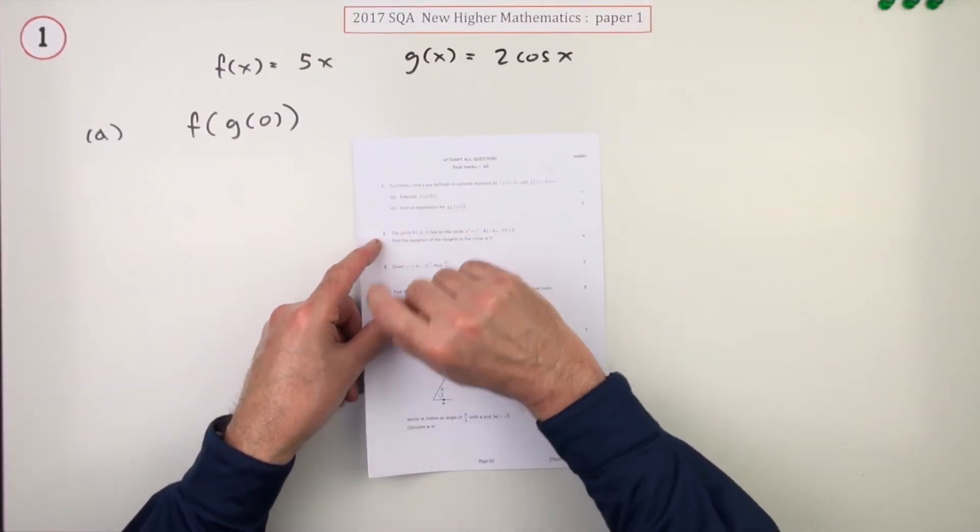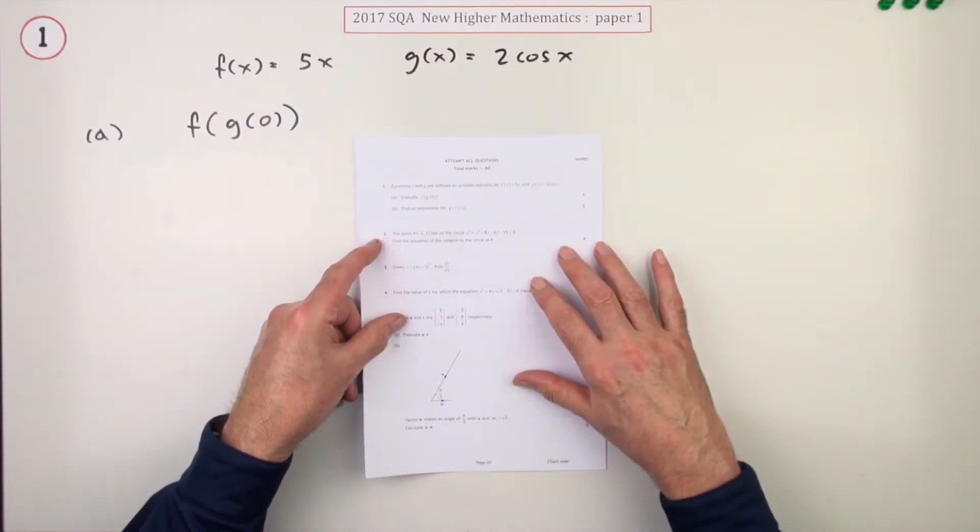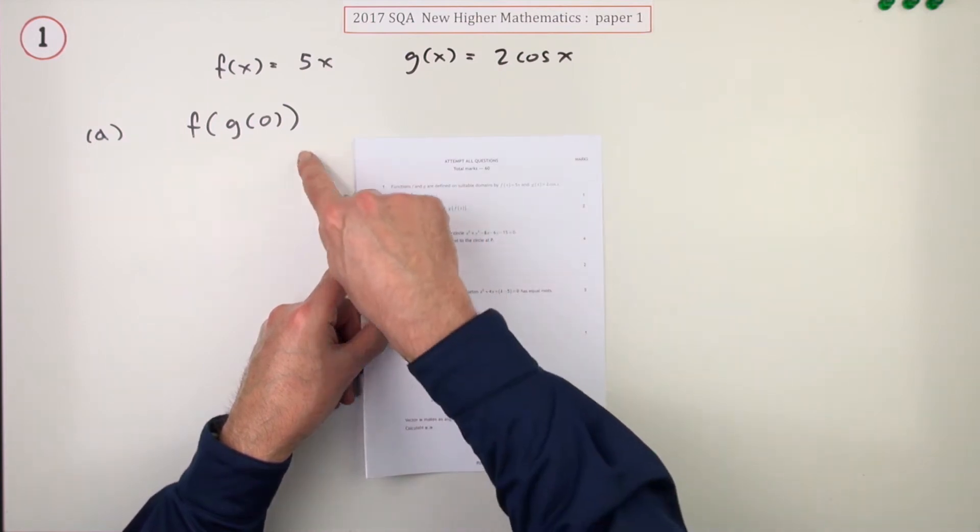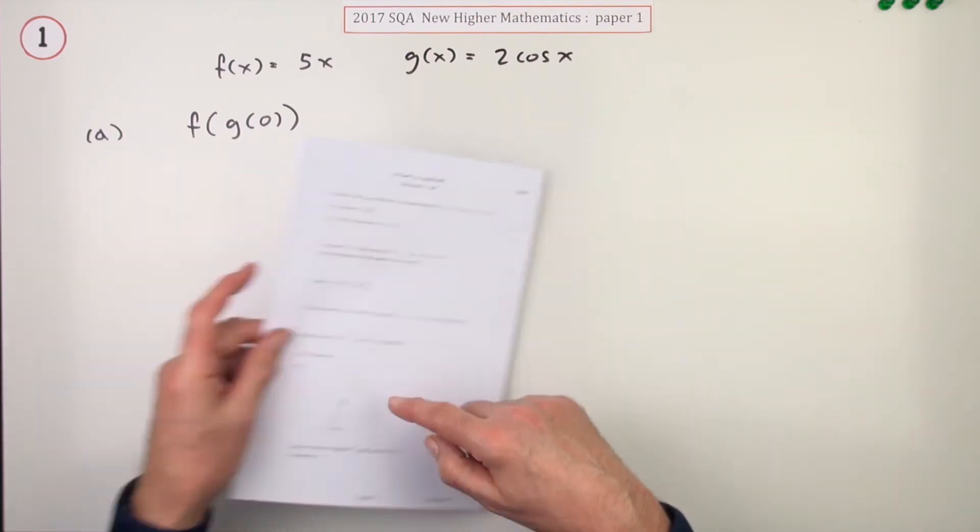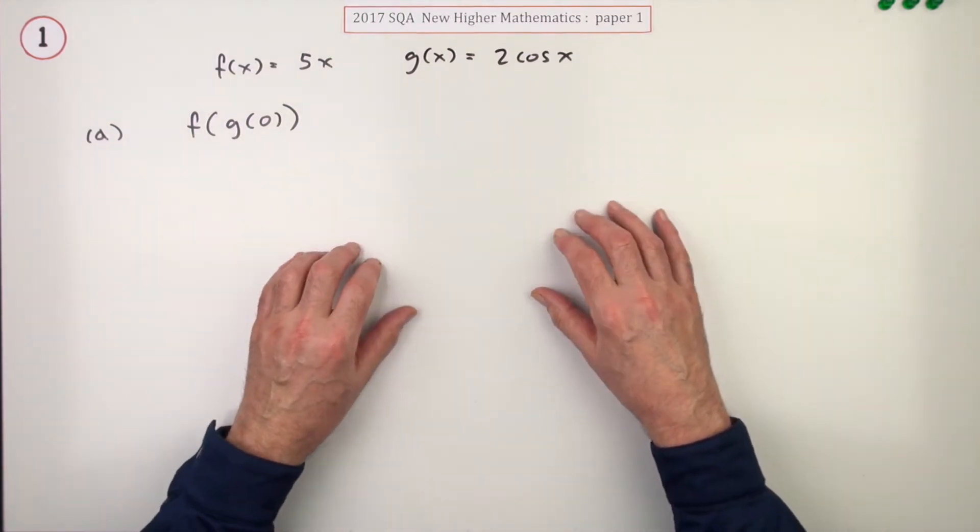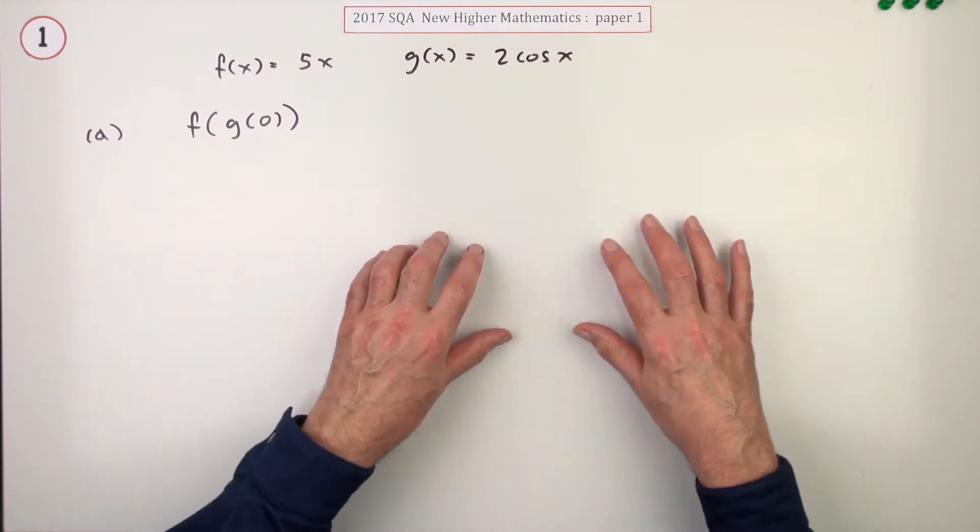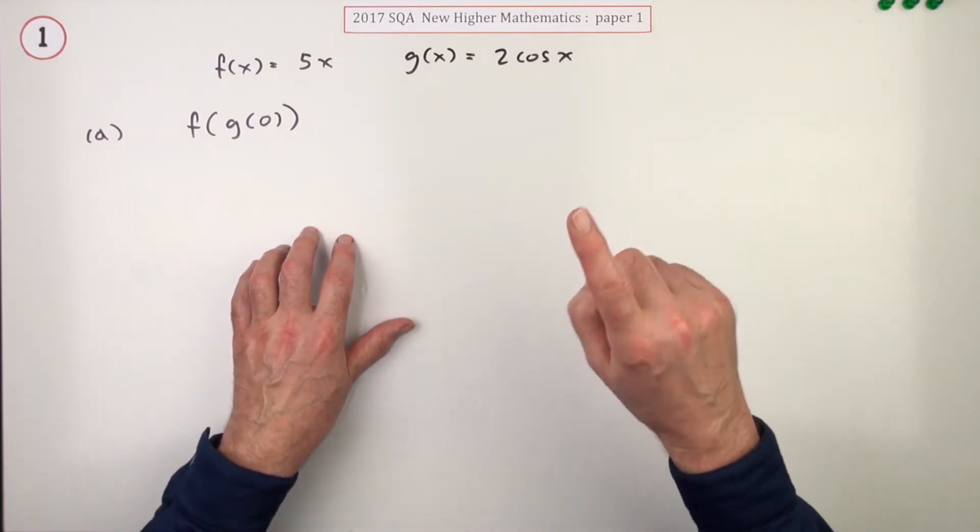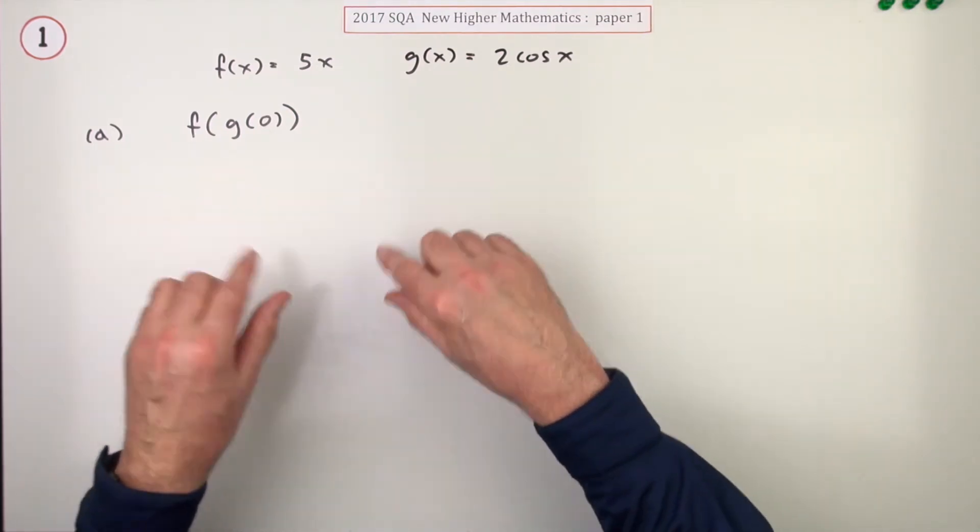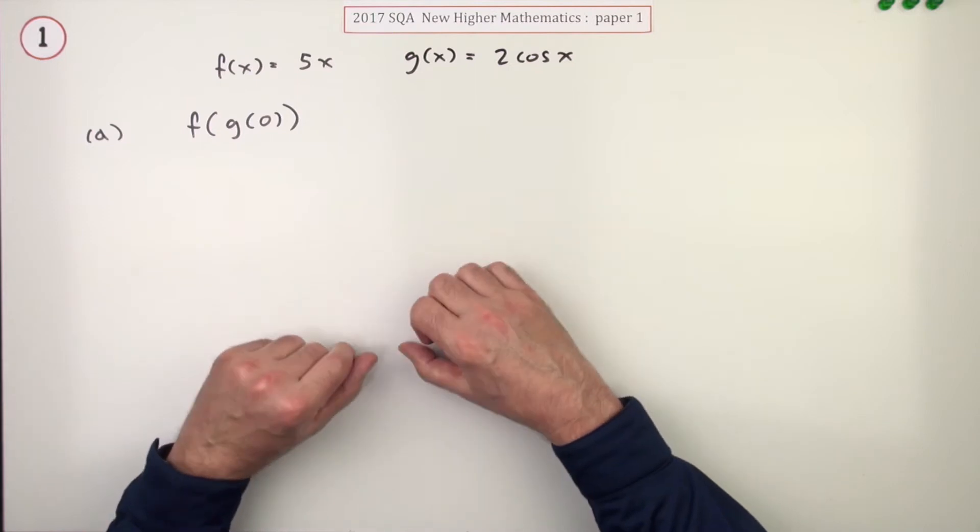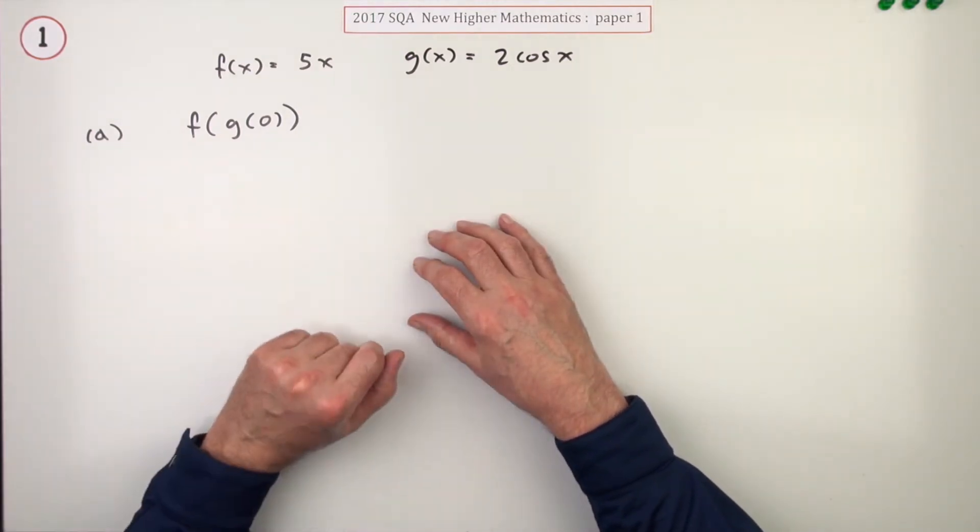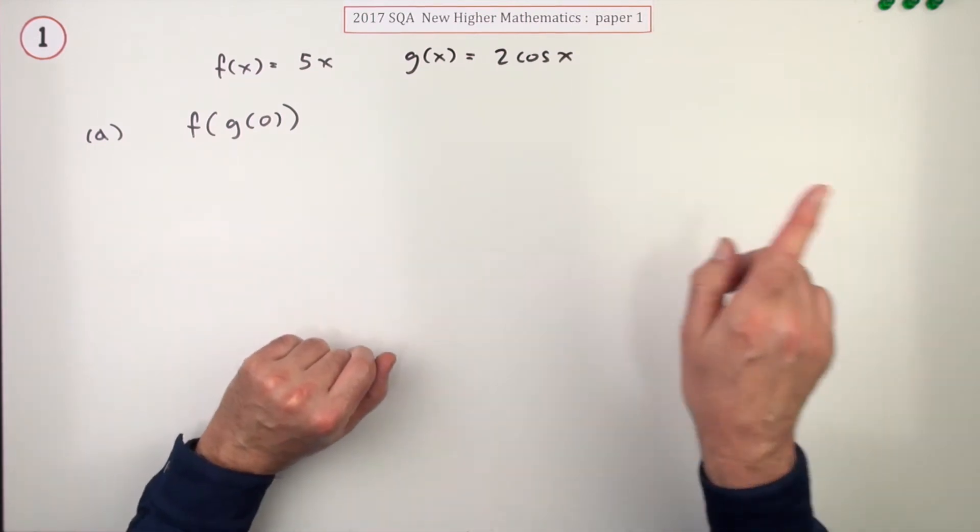So here we are then, the first question from the 2017 Higher Maths, three marks, functions of functions. The first part is only worth one mark. Now the marking scheme does say for all questions a correct answer with no working receives no marks unless stated otherwise in the marking scheme, but you don't know that. So what you should really do is put down working. It helps you check it afterwards anyway. Strictly speaking, yes, if you just put down the answer to this, if you just take the answer, you'll get that mark according to the marking scheme.